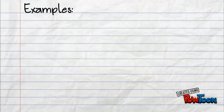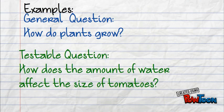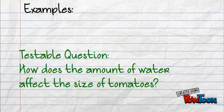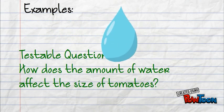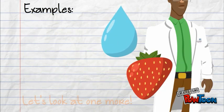Let's look at an example. A general question will be, how does a plant grow? A testable question will actually be, how does the amount of water affect the size of tomatoes? Do you see the change is actually the water? And what we're measuring is the size of the tomatoes.